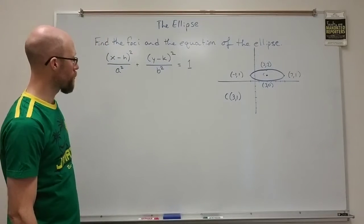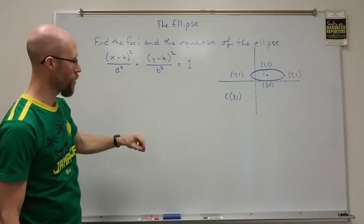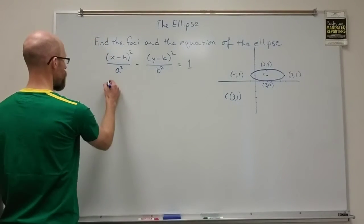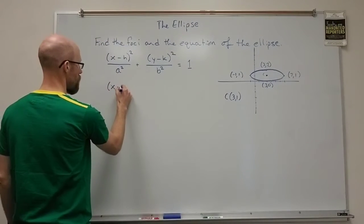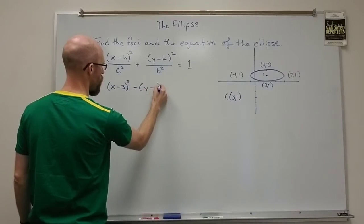Alright and so now I need to figure out what all these values are. The a, b, h, and k. Well the h and k are pretty simple. They're 3 and 1. They come right off the center. So I can put those in immediately. x minus 3 squared plus y minus 1 squared.